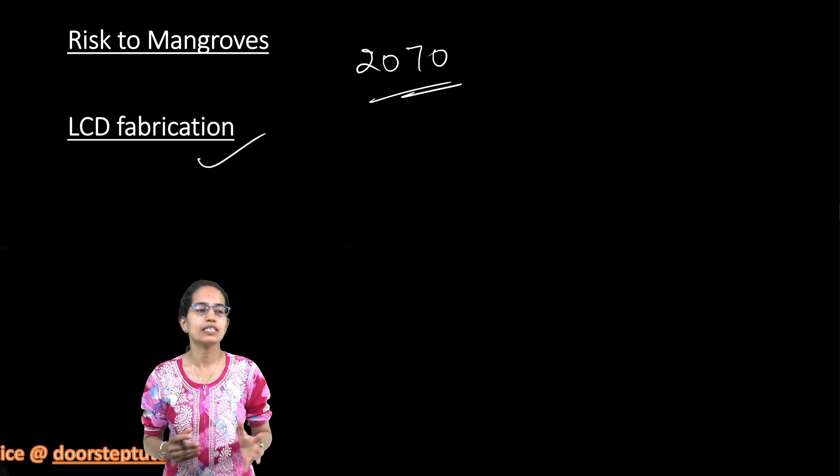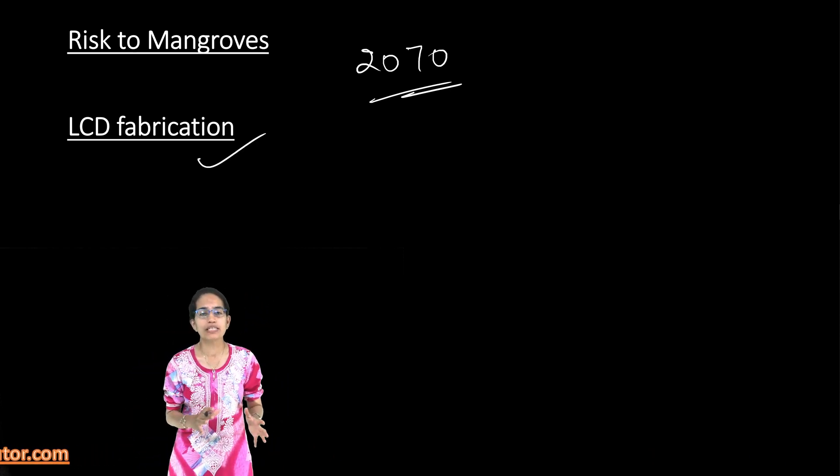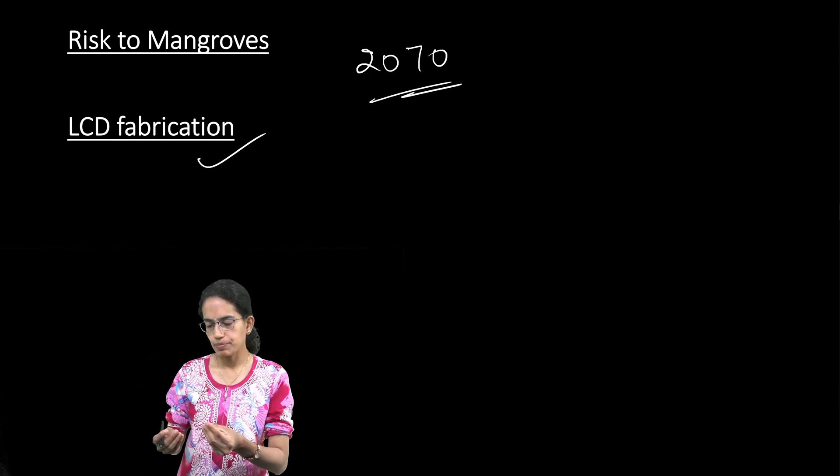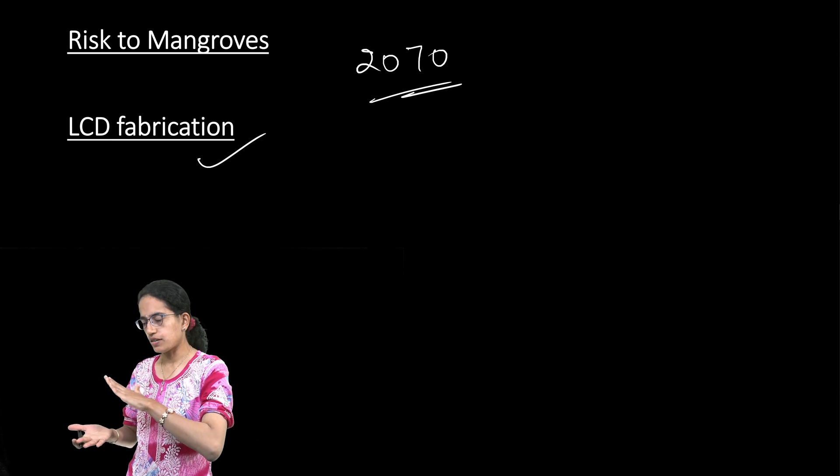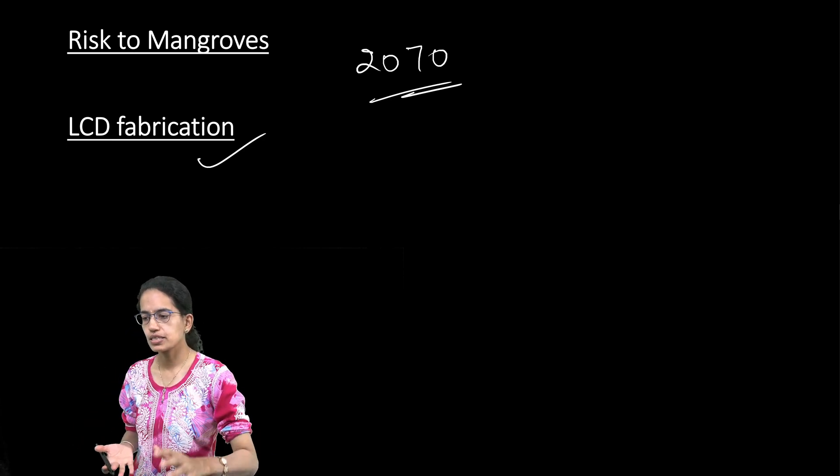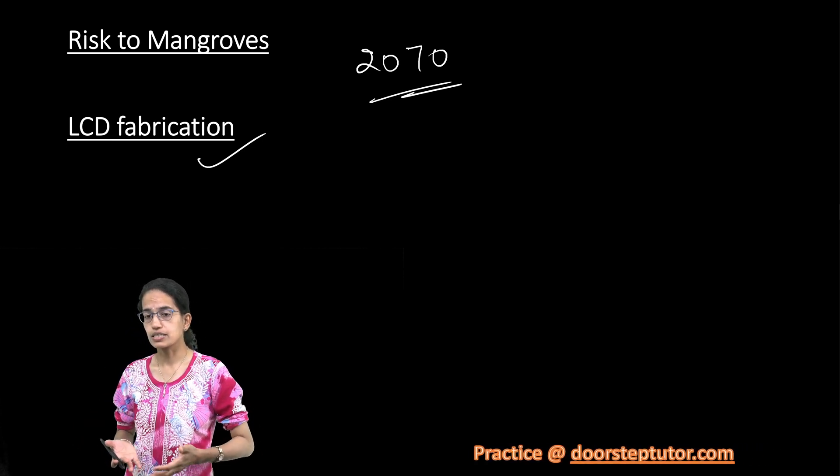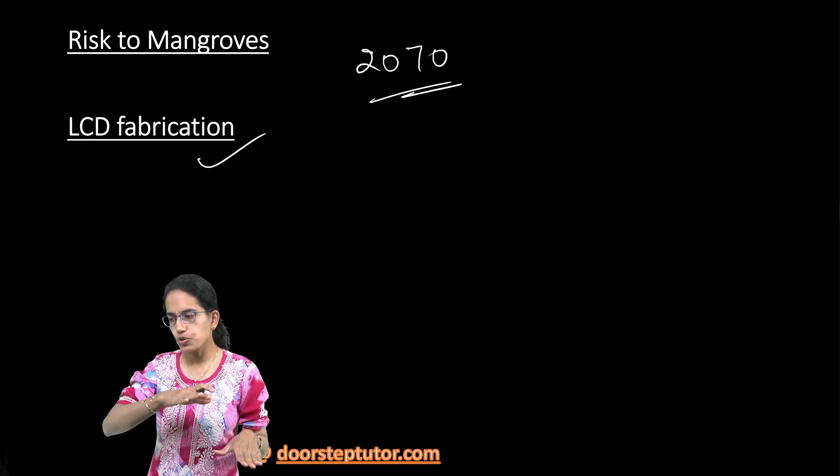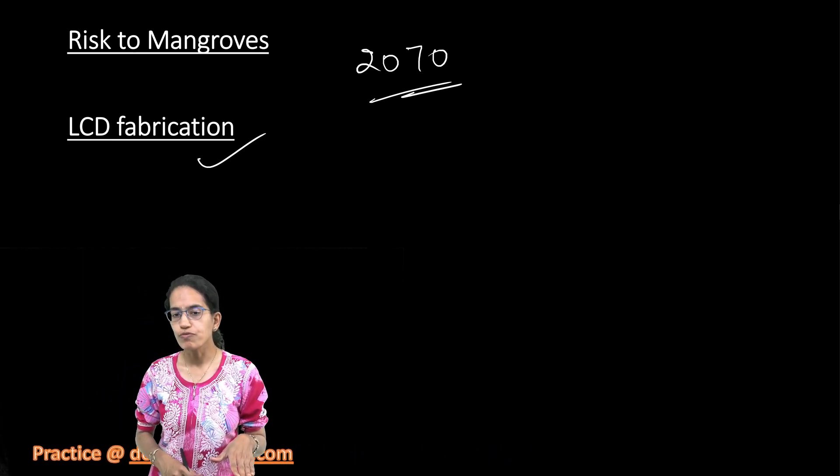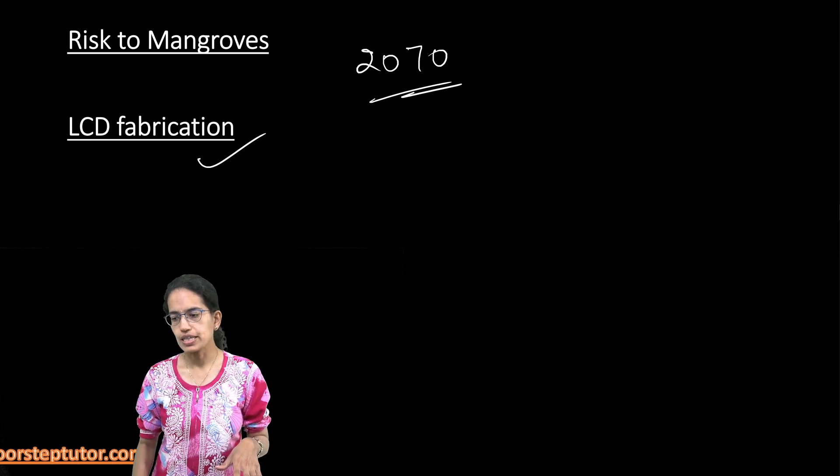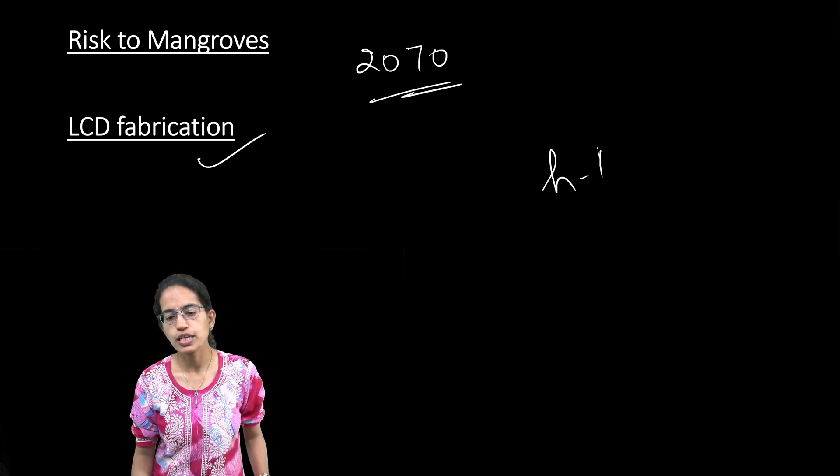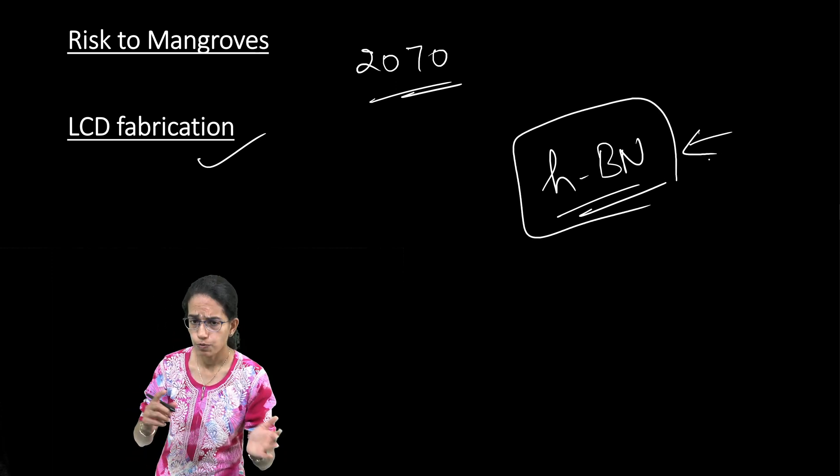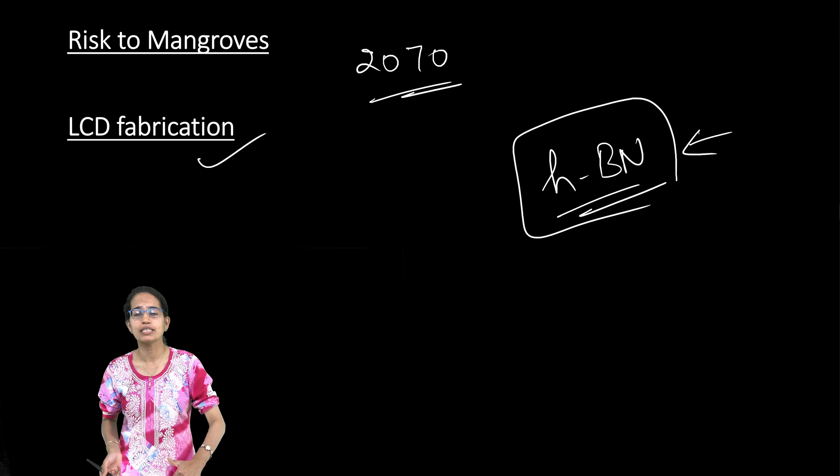The next is liquid crystal display fabrication. This liquid crystal display actually have some undesirable material and dust particles which interfere with the display operations and produce electrostatic charges. To prevent that, this liquid crystal is actually a unidirectional planar alignment of the liquid crystals, and there has been a technology using HBN nanoflakes and this material has been found more useful and reduces the dust interference and the problem of electrostatic charges.